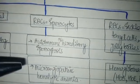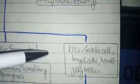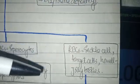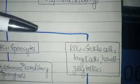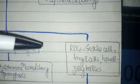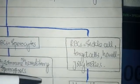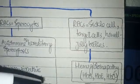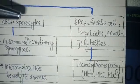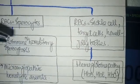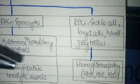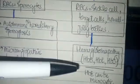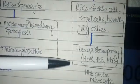If the RBCs have sickle shape, target cells, or Howell-Jolly bodies, this can be due to hemoglobinopathies such as HbS, HbE, or HbC. Note that HbE can also present in microcytic anemia.